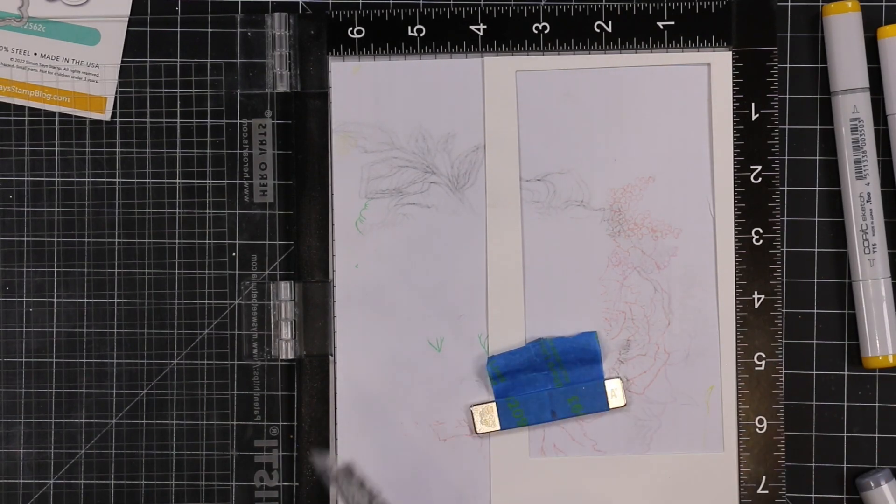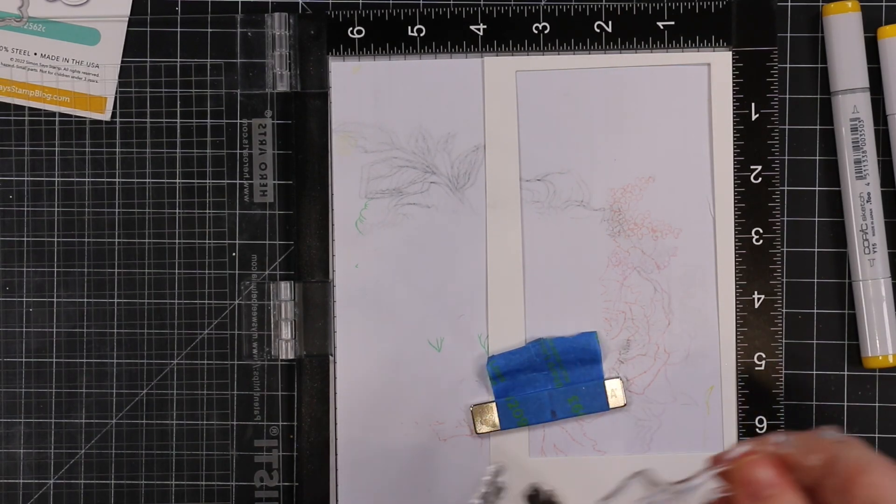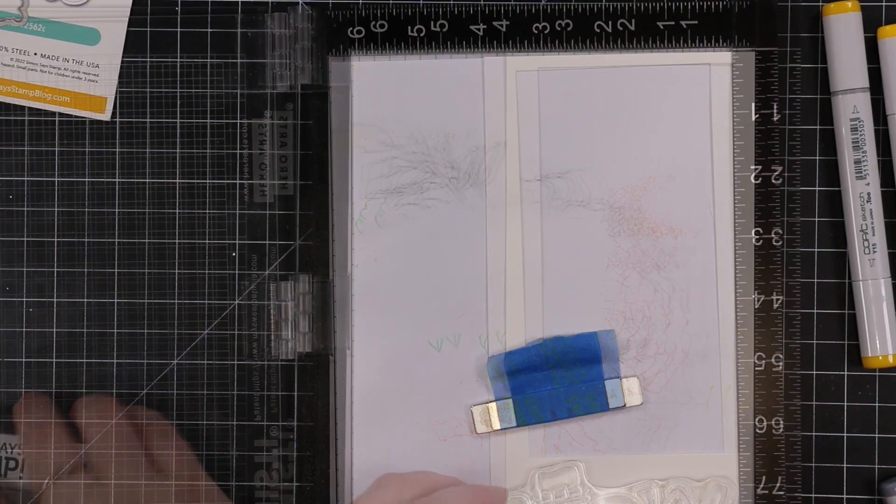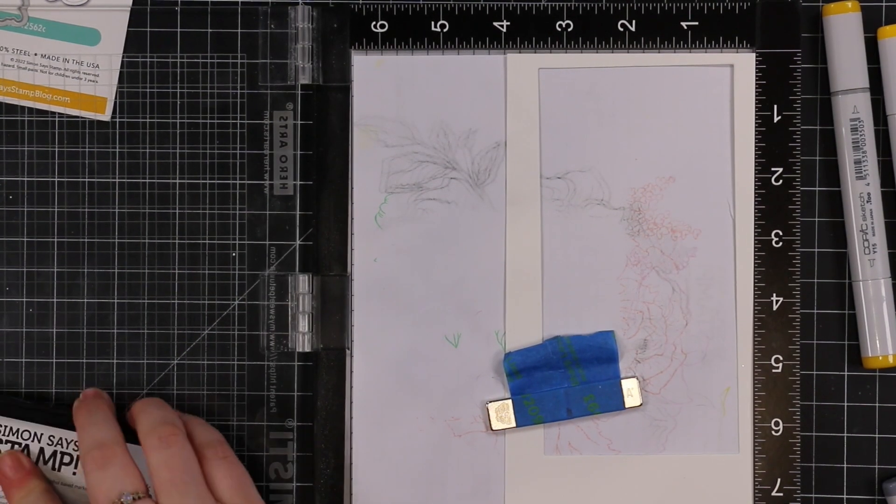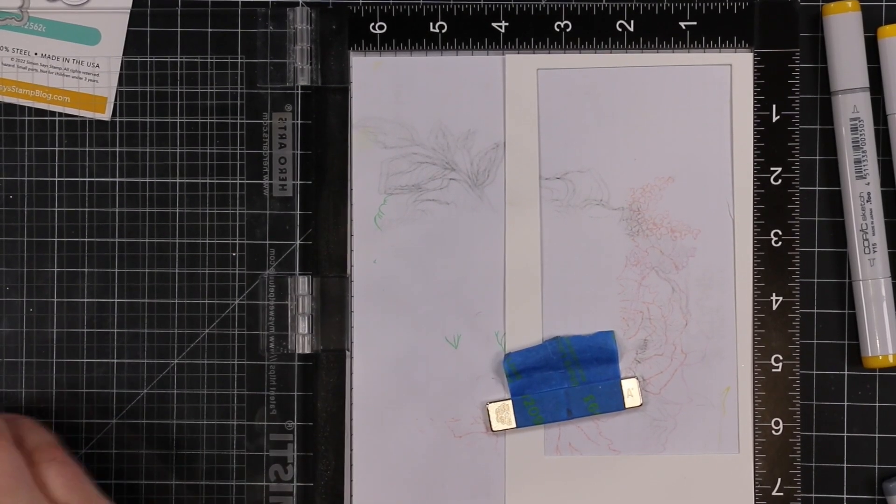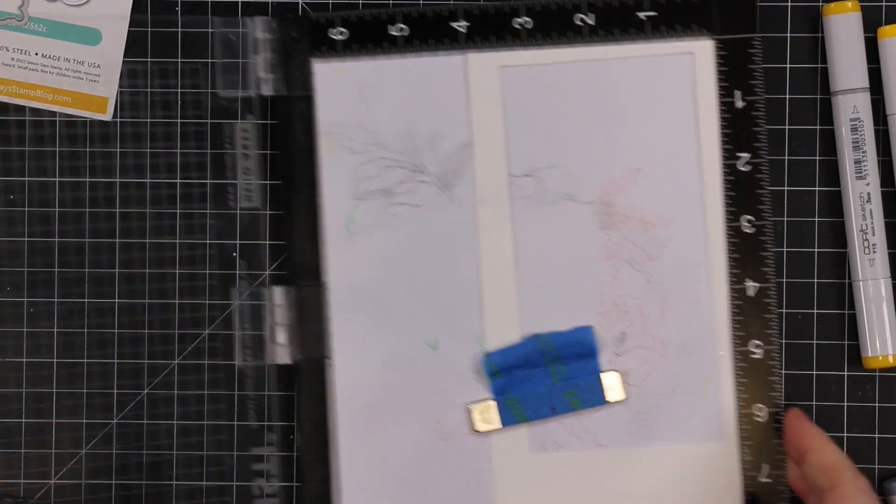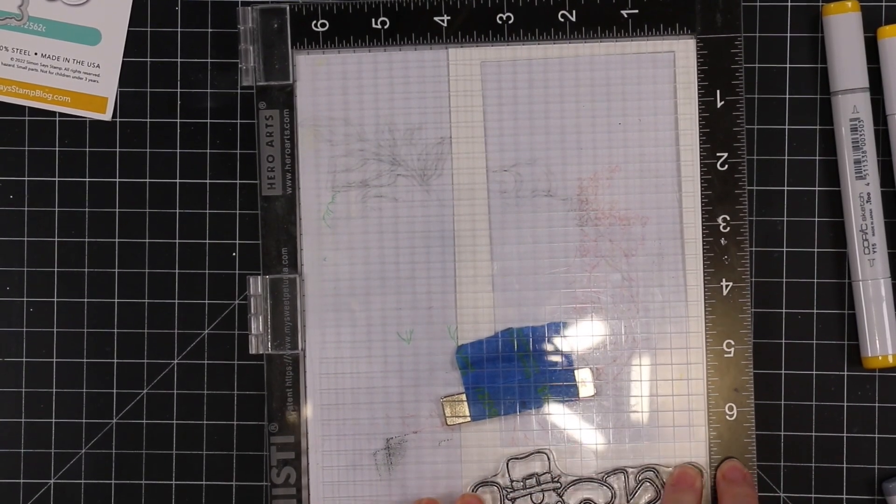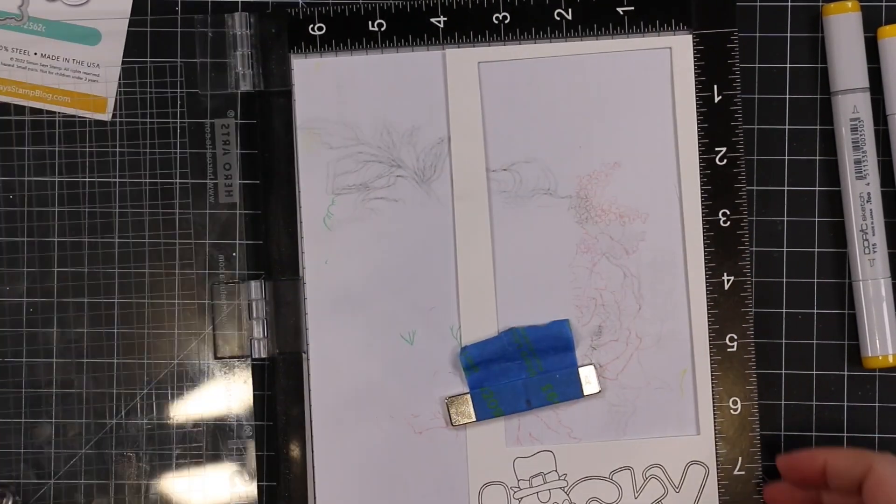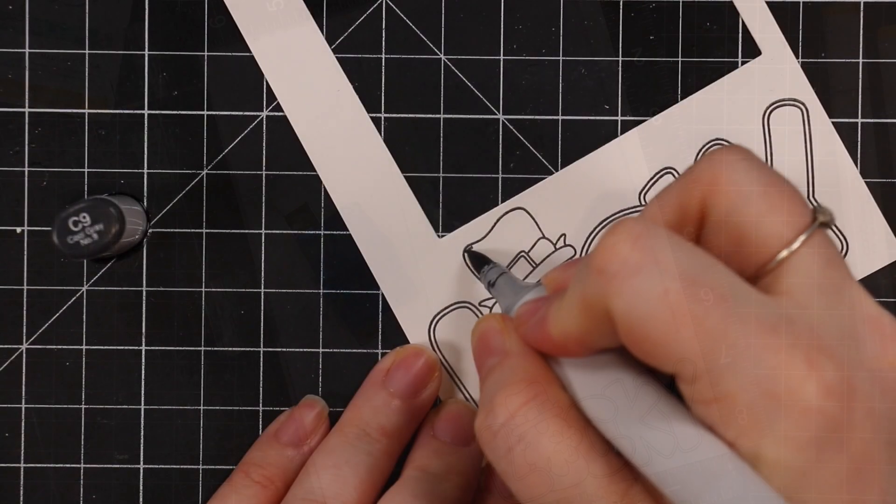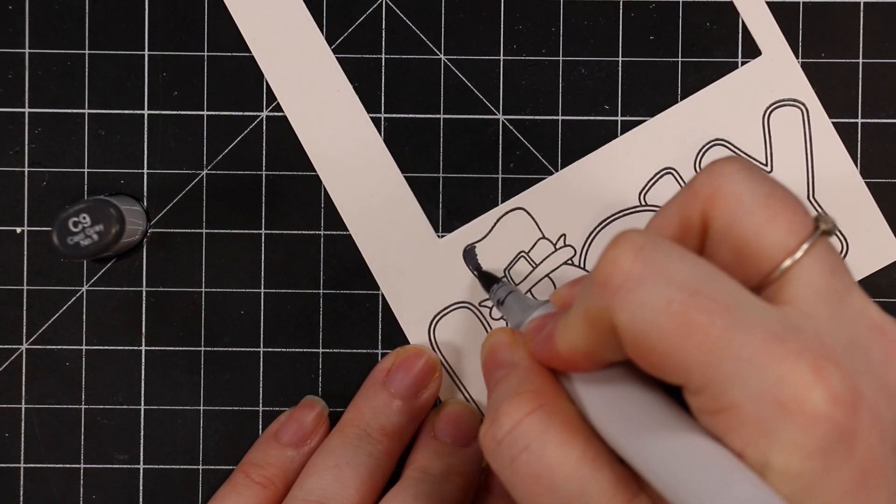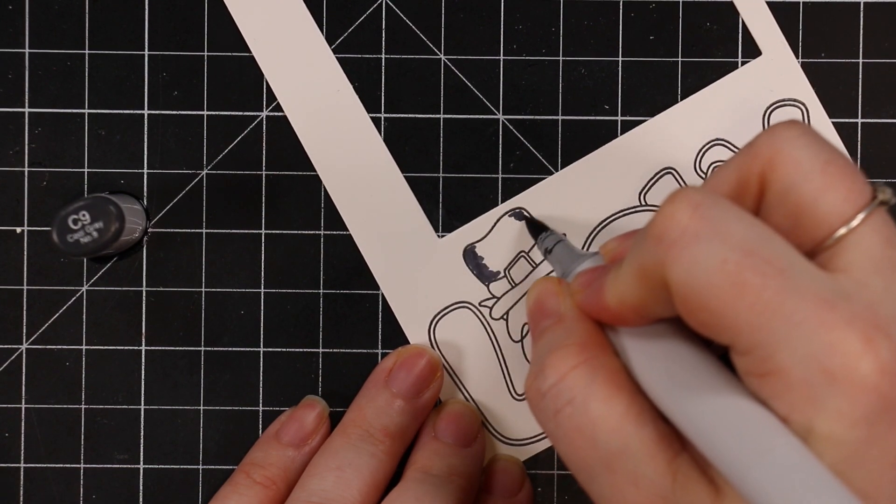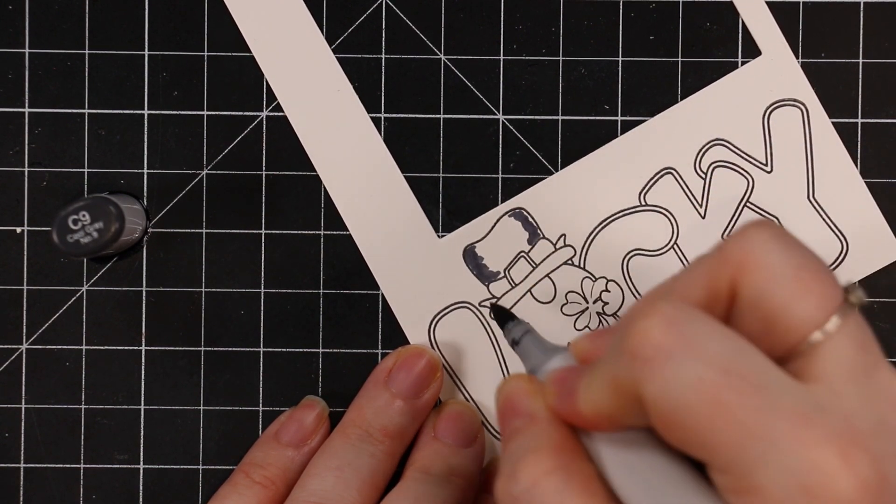The image is from the Gnome Lucky little mini stamp set that Simon just released with their Good Luck Charm release. I thought it was super cute. I put it in my MISTI and inked up the stamp with Intense Black ink on Simon's 120 pound smooth white cardstock.